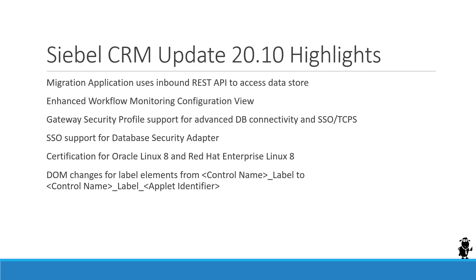First, we have changes to the migration application — it now uses the inbound REST API to access the data store. Previously, it used the REST API to authenticate and used JDBC for accessing the data store tables in the Siebel database. Now it uses the REST API for both.